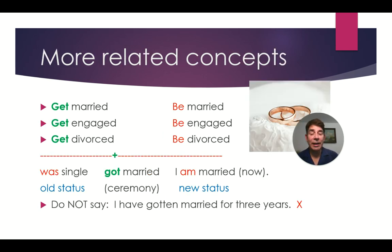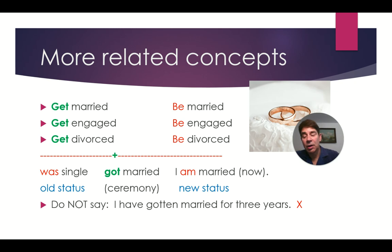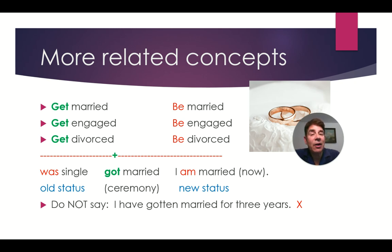Here are some more related concepts. Get married and be married. Get engaged and be engaged. Get divorced and be divorced. For example, last year I was single. Then something happened. I got married. I am married now. The old status is 'I was single.' Then the ceremony occurred. Now the new status is that I am married.